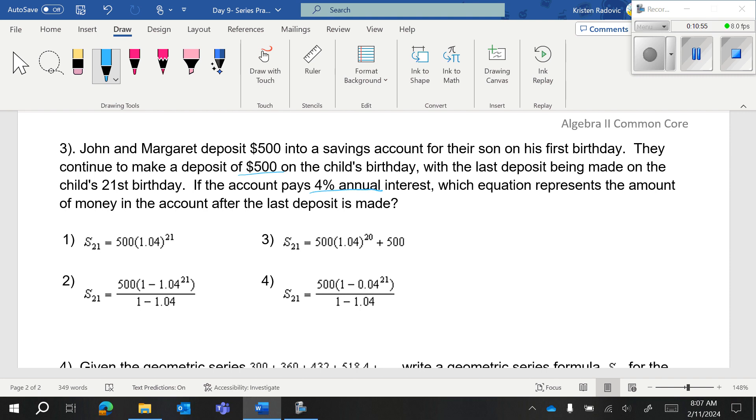So you have S sub N equals A sub 1 minus A sub 1 R to the N over 1 minus R. Now because you're doing 21 years, N is equal to 21. A sub 1 is 500. And because you're increasing, you're doing 1 plus the rate. 1 plus the rate is going to be 1 plus 0.04. And that's going to be 1.04. So let's see what we get. We get S sub 21 equals 500 minus 500 times 1.04 to the 21st over 1 minus 1.04.